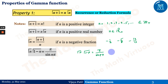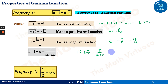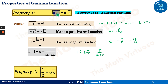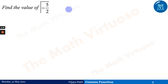Property two states that gamma of 1 by 2 equals the square root of pi. The proofs for gamma of 1 by 2 equals root pi and the recurrence formula gamma of n plus 1 equals n times gamma of n are interesting but will not be covered in this particular session.